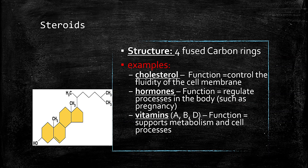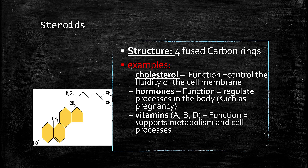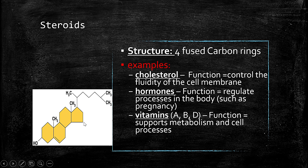Next, we have steroids. Steroids can be found in many forms — they can be testosterone or other hormones. Steroids are typically found as hormones, and also as cholesterol and vitamins. We can identify a steroid group by the presence of four fused carbon rings. Since there are four of them, these are steroids, and they can be cholesterol, hormones, or vitamins.